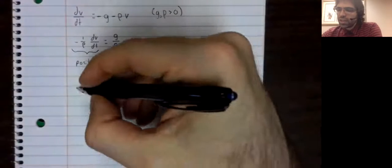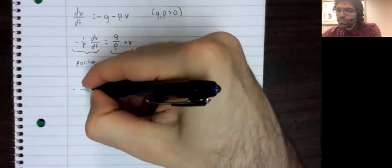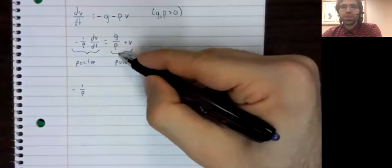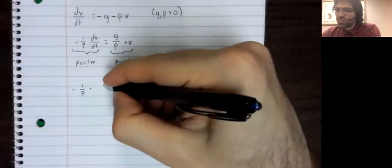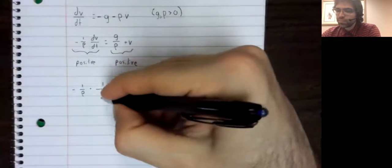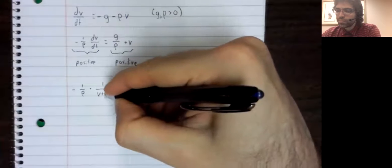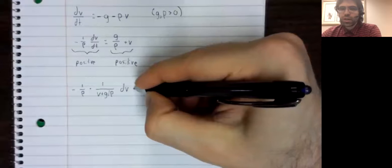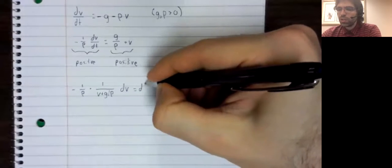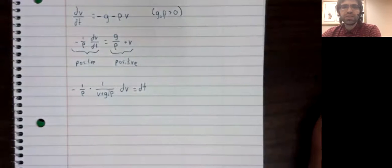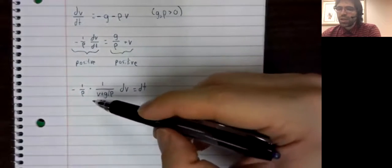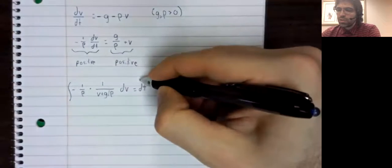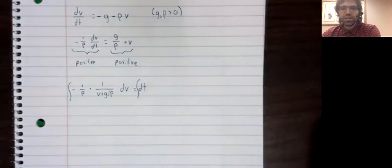Let's finish separating the variables. We'll divide both sides of the equality by this. And we'll multiply both sides of this equality by dt. And now we'll integrate the left and the right side.